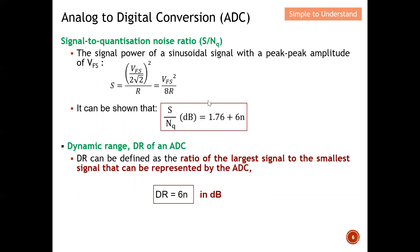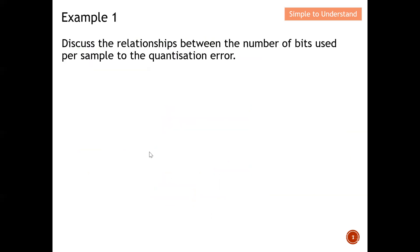Next, the signal-to-quantization noise ratio is governed by the equation: S/N = 6N + 1.76 dB, where N is the number of bits. Whatever the number of bits, substitute into this equation and the signal-to-quantization noise ratio will be in dB. For dynamic range, it's even simpler — it's just 6N dB. Substitute the number of bits into N to compute the dynamic range.